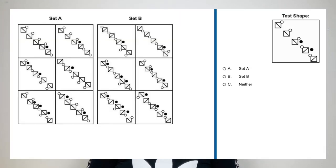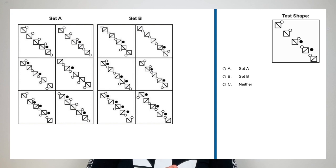It is so important that you understand the different types of questions that can come up in abstract reasoning. There will be four different types you'll come across. Type 1 questions are when you'll be presented with two sets of shapes labelled set A and set B, and you'll be given a test shape and asked to decide whether the test shape belongs to set A, set B, or neither.